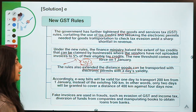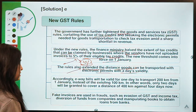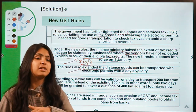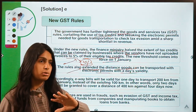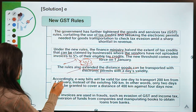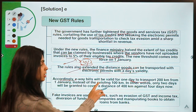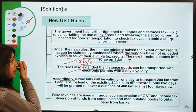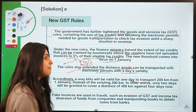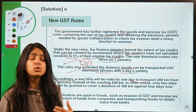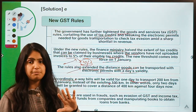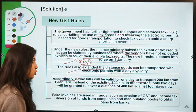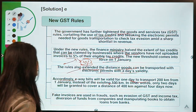Rules have also been extended for the distance goods can be transported — basically e-way bills. E-way bills are used to send goods from one place to another whenever you are making a sale. The e-way bill will be valid for one day to transport 200 kilometers from the first of January, instead of the existing 100 kilometers, so the distance limit has been doubled. The reason businesses are required to pay 1 percent tax is to curb tax evasion — sometimes businesses use fake invoices to show they have paid a lot of tax and need not pay any additional tax.